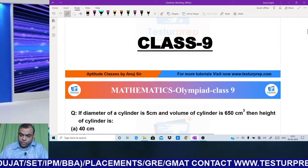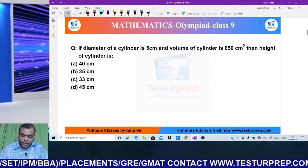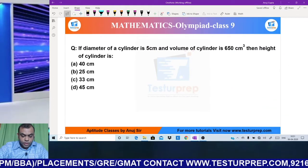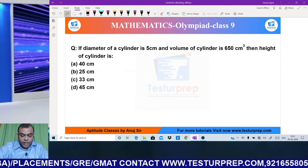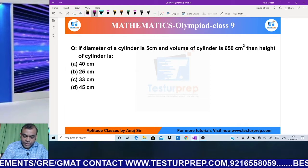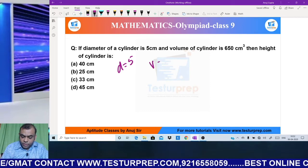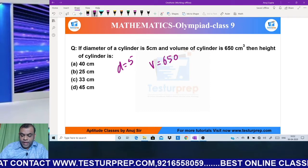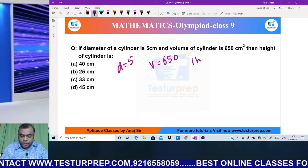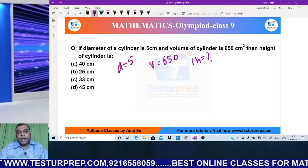My first question says that if diameter of a cylinder is 5 centimeters and the volume is 650, then find the height of the cylinder.